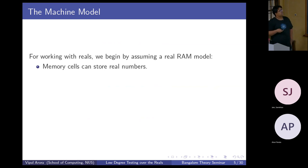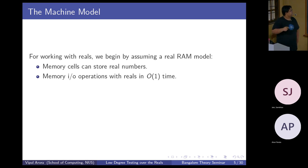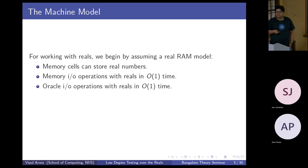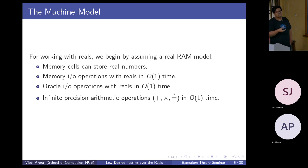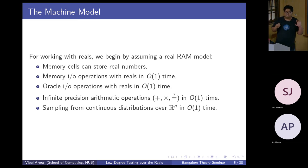For working with the reals, we will start our work by assuming a real RAM model. In a real RAM model, memory cells can store real numbers with infinite precision. Arithmetic operations — addition, multiplication, and identity tests — are also possible in constant time, and sampling from continuous distributions over R^n is also possible in constant time.